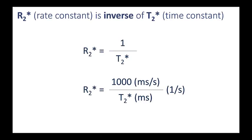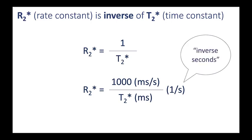R2* is a rate constant, and it is the inverse of T2*, which is a time constant that many of you might be more familiar with. So R2* is simply 1 over T2*, but it's usually expressed as 1,000 over T2* in milliseconds, so that with milliseconds in the denominator we end up with units of inverse seconds. So the unit of R2* is inverse seconds.